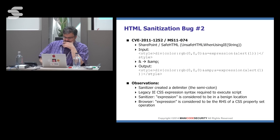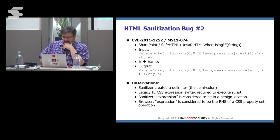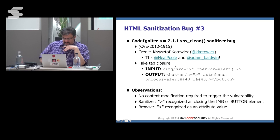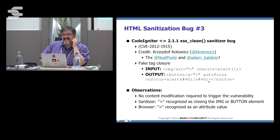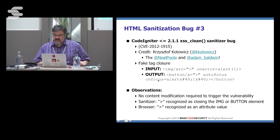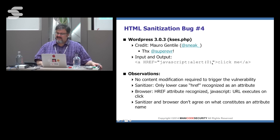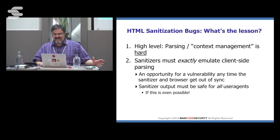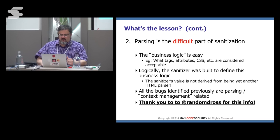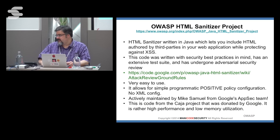We have the same kind of problem in SharePoint — a very popular system in the Microsoft world — which allowed an expression that will execute in older versions of IE. CodeIgniter took malformed HTML input and by trying to clean it up, made it executable — even though it's HTML entity encoded, which is legal in an attribute. WordPress 3.0.3 and before accepted JavaScript URLs which will execute when the page is rendered in all browsers. The point is that high-level parsing of HTML is incredibly difficult. We need a formal library to do this for us.